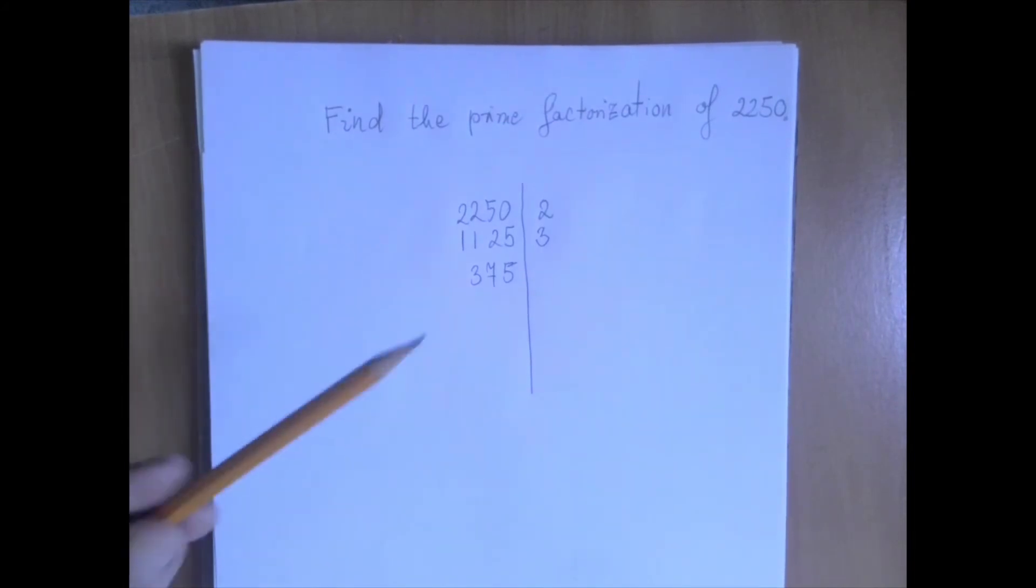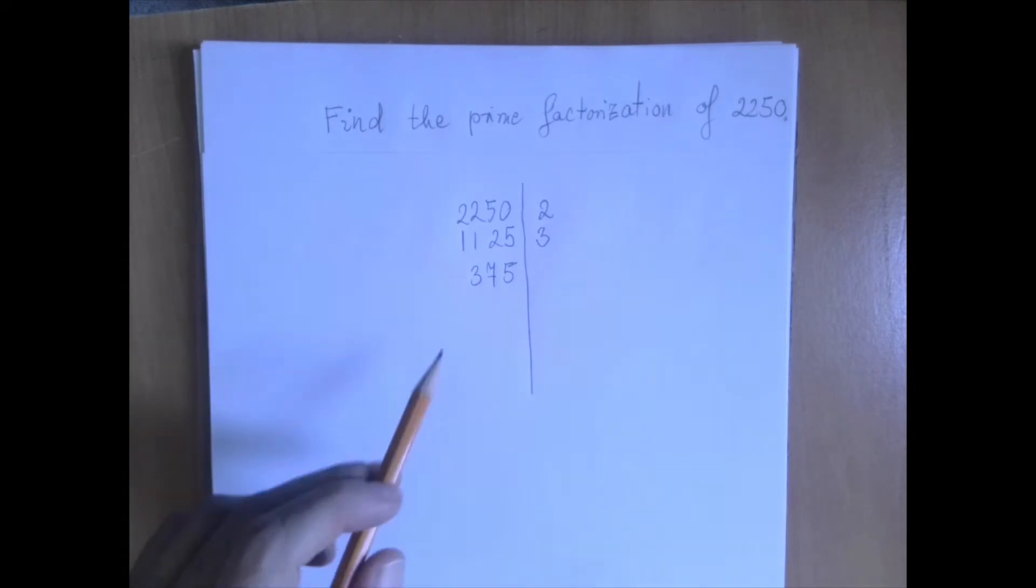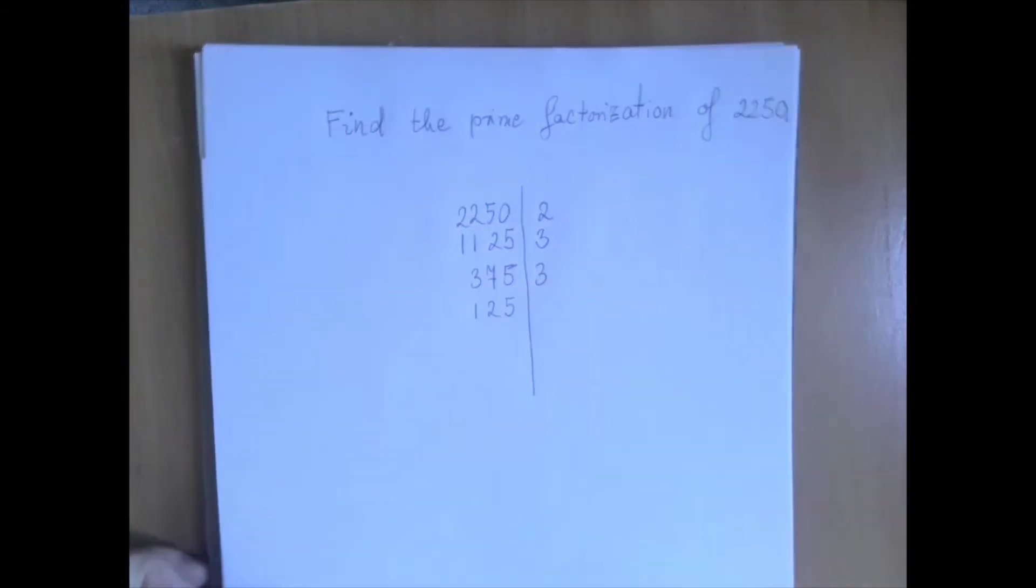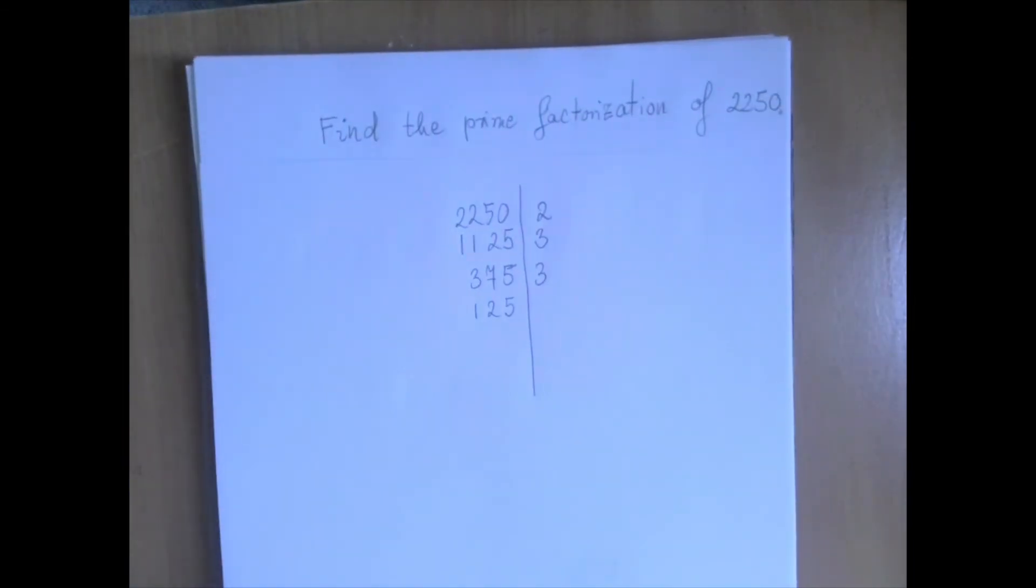So we're going to ask the same question again. Is this number 375 divisible by 3? We add the digits. We find that it is still divisible by 3. So we write down that factor and we divide. And we ask again, is this number 125 divisible by 3? We add the digits. The sum of the digits is 8. That's not divisible by 3, so we exhausted the prime number 3.